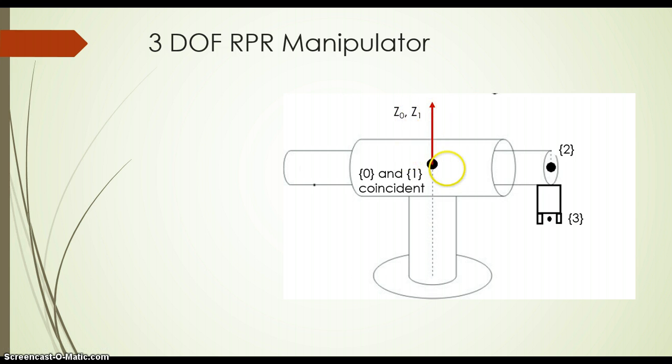Now, as joint 1 is rotating about vertical axis, z1 will be the motion axis. So z0 and z1 will be coincident. Joint number 2 is the horizontal lamp which is moving inward and outward, so z2 we will assign in the direction of motion. Let's say positive z2 is directing towards the right side.